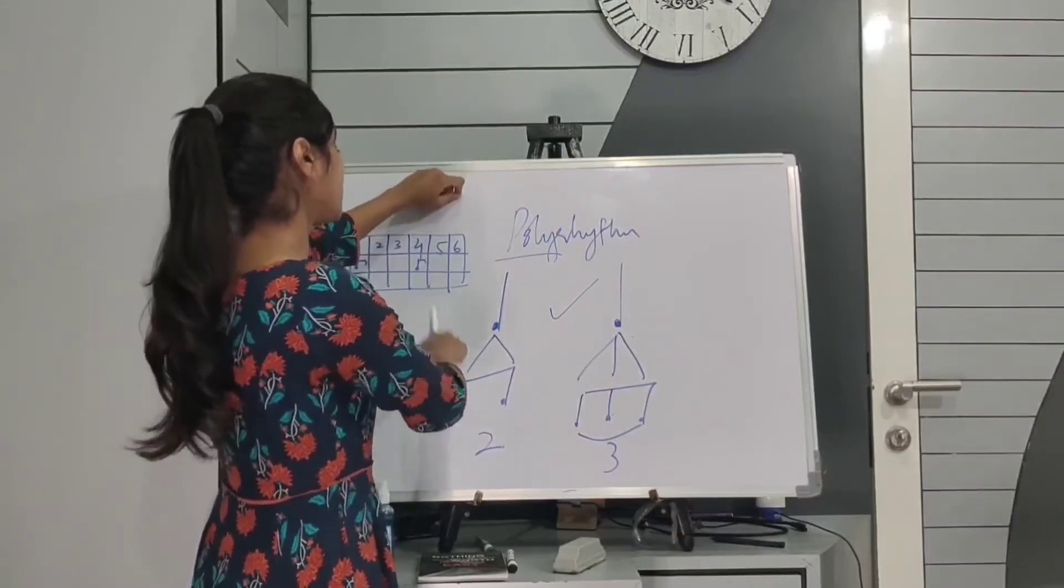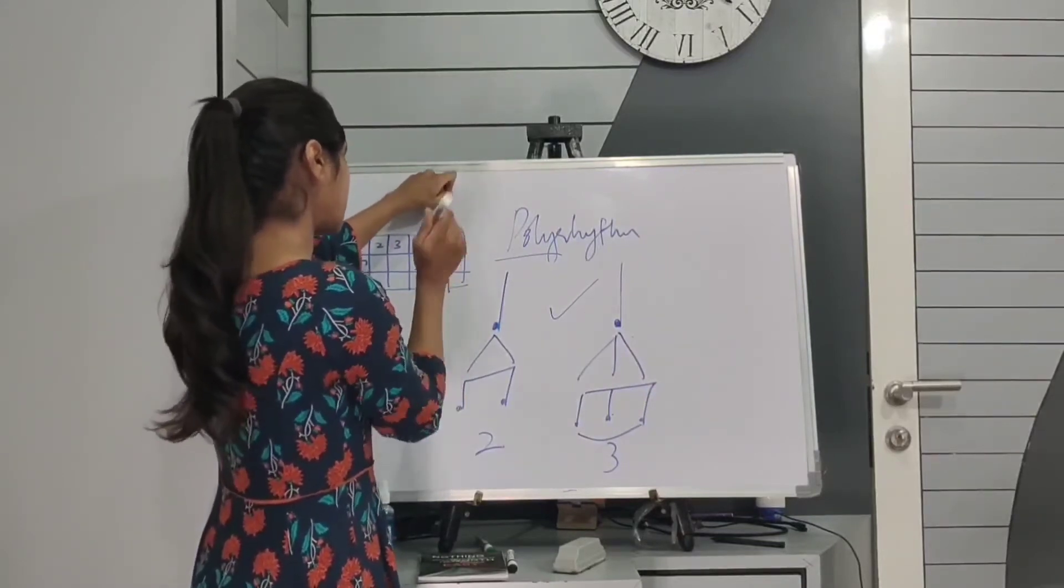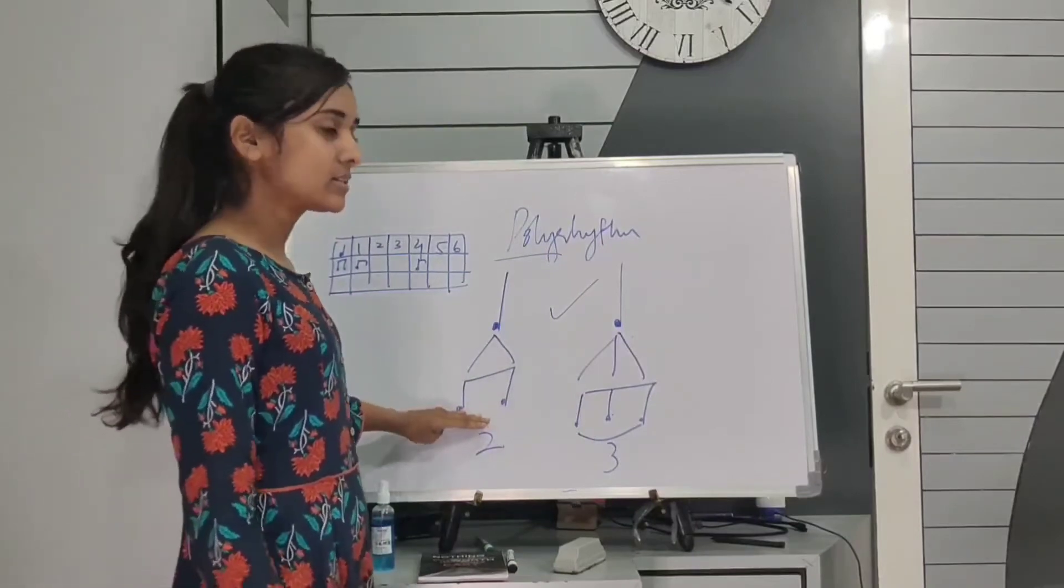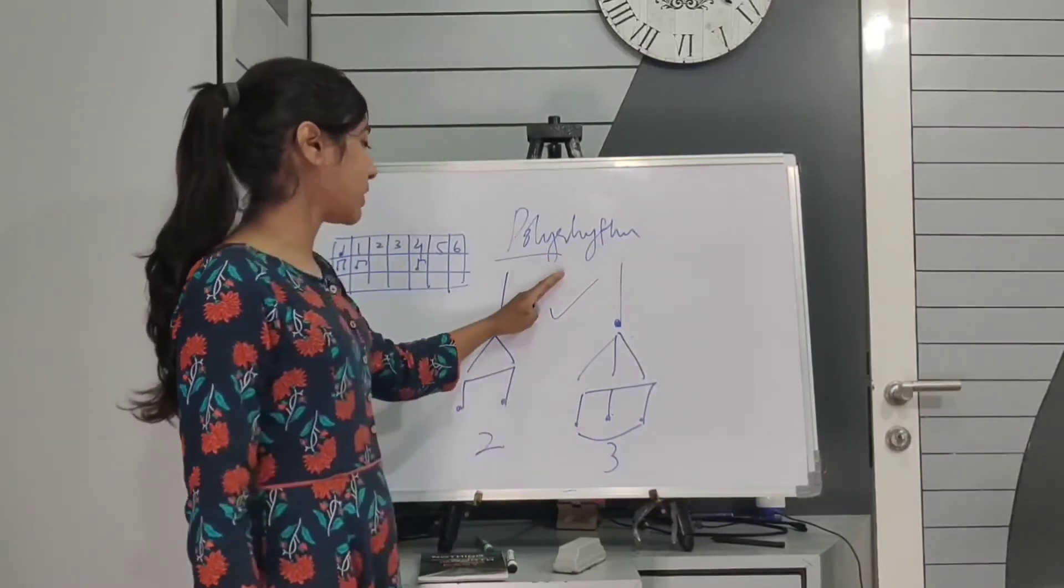So one, two, three, four, five, six. One, two, three, four, five, six. One, two, three, four, five, six. That's the two notes going equally in one beat.